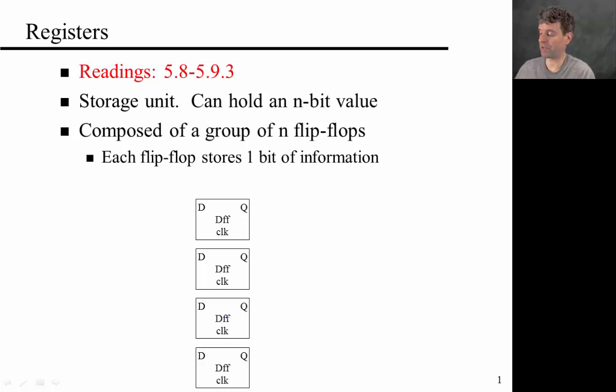For example, here is a 4-bit register. So flip-flops data is coming in to each, so data here, this is a 4-bit number, sorry it should be a D, D3, D2, D1, D0, that can be read into this register, and the register value R3, R2, R1, R0 can be read out. And of course all of these flip-flops, as always, are connected to a clock signal.